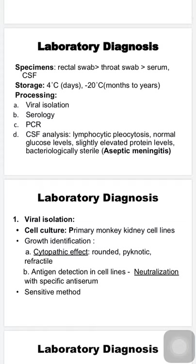For laboratory diagnosis, the best specimen is a rectal swab or stool, as virus shedding lasts up to four weeks. Throat swab is less preferred with shedding up to one week. Serum and CSF are the least preferred specimens. Specimens must be transported immediately to the lab; if delayed, use viral transport media or store at 4°C for 24–48 hours, or at minus 20°C for months to years. Processing involves viral isolation in cell lines, serology, molecular methods like RT-PCR, and CSF analysis.